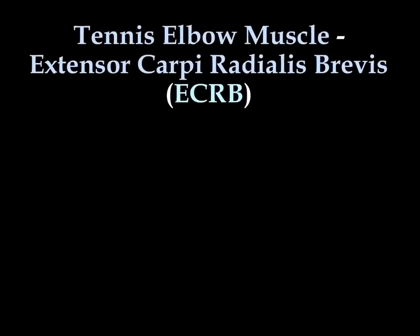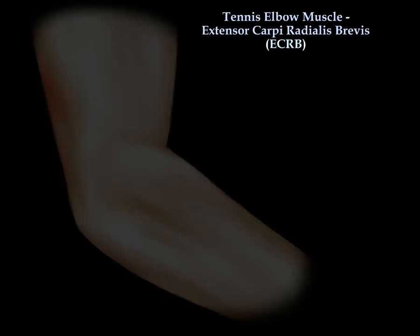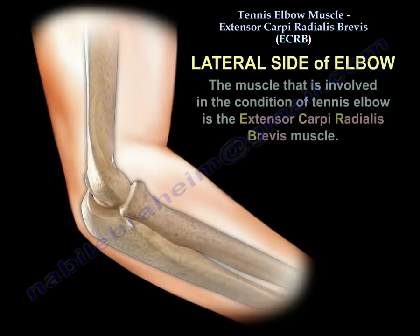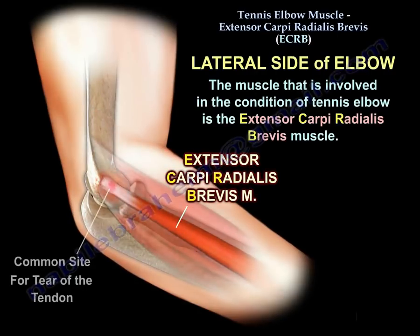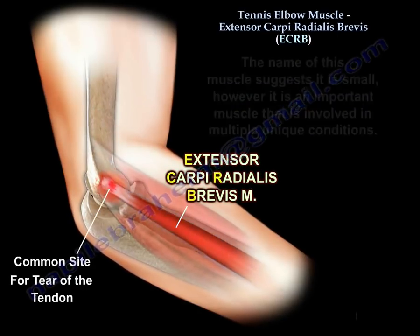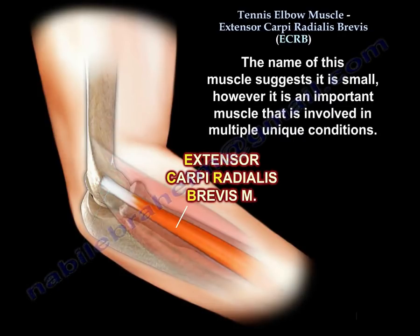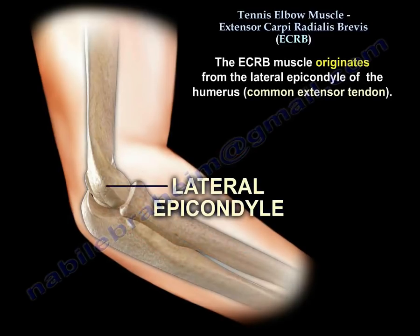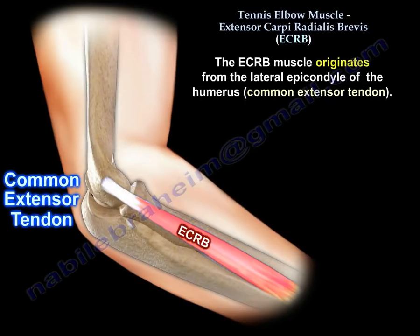The tennis elbow muscle is the extensor carboidialis previs, ECRB. The muscle involved in the condition of tennis elbow is the extensor carboidialis previs. The name suggests it is a small muscle, however, this muscle is an important muscle and it is involved in multiple unique conditions. This muscle originates from the lateral epicondyle of the humerus, called the common extensor tendon.